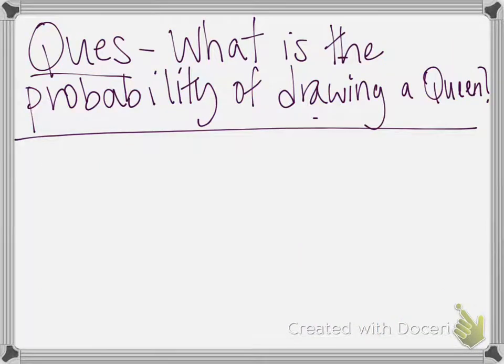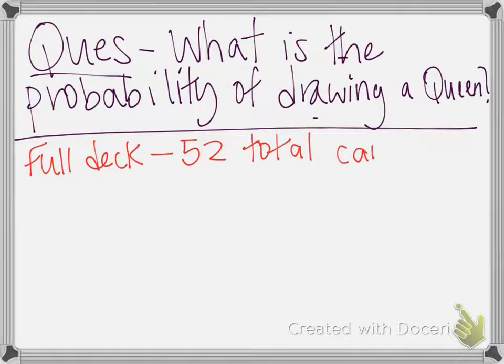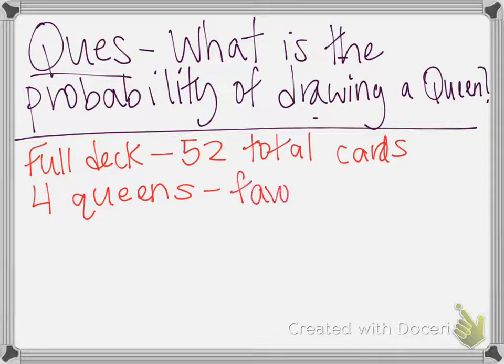So perhaps our question says, what is the probability of drawing a queen out of a deck of cards? If we have a full deck, that contains 52 total cards, right? And in that full deck of 52 total cards, there are 4 queens. So those are our possible favorable outcomes, the 4 queens.